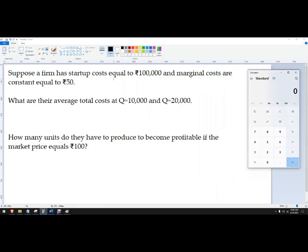Suppose a firm has startup costs equal to ₹100,000 and marginal costs are constant at ₹50, so each unit is going to cost us an additional ₹50.